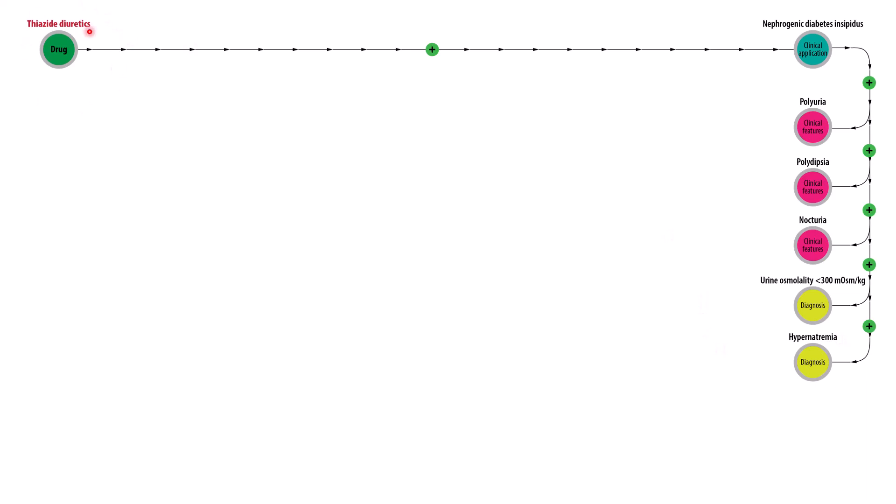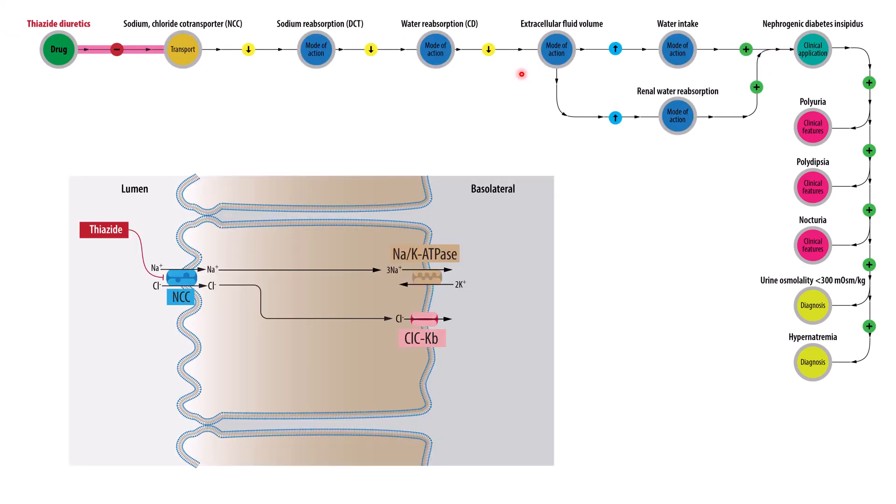Let's turn our attention to how thiazide diuretics are then used to treat nephrogenic diabetes insipidus. And let's acknowledge the fact that it seems counterintuitive to give a diuretic to somebody who's already urinating too much. So again, as a reminder, thiazide diuretics inhibit the sodium chloride co-transporter. That's what this red negative mark represents.